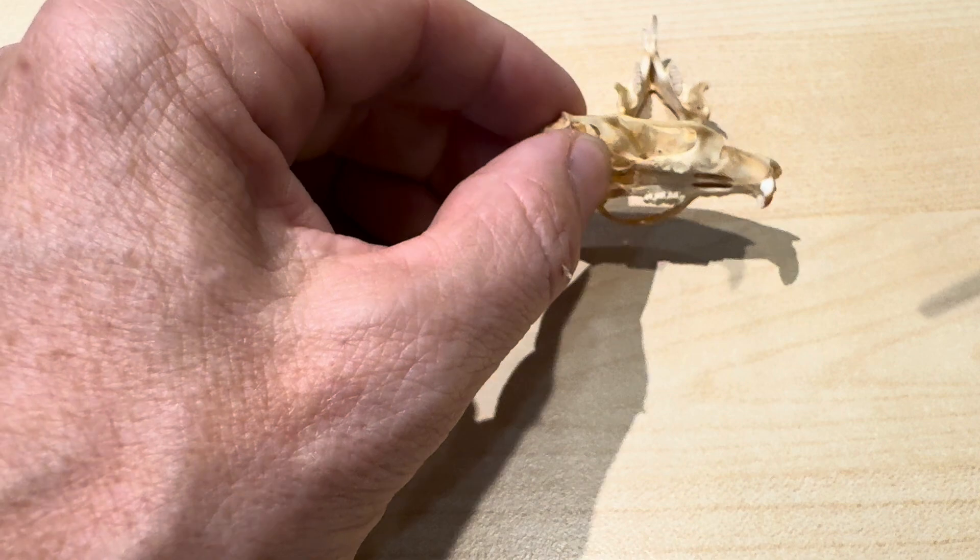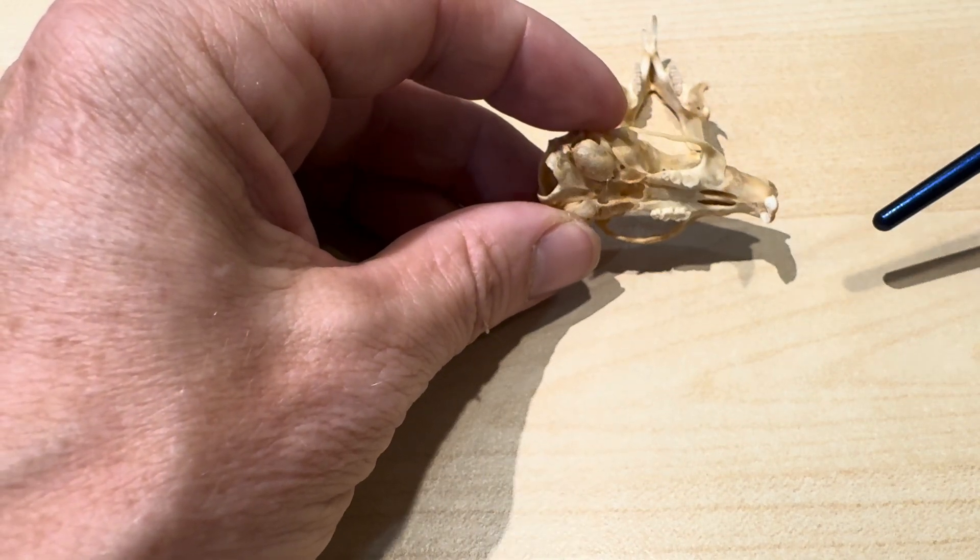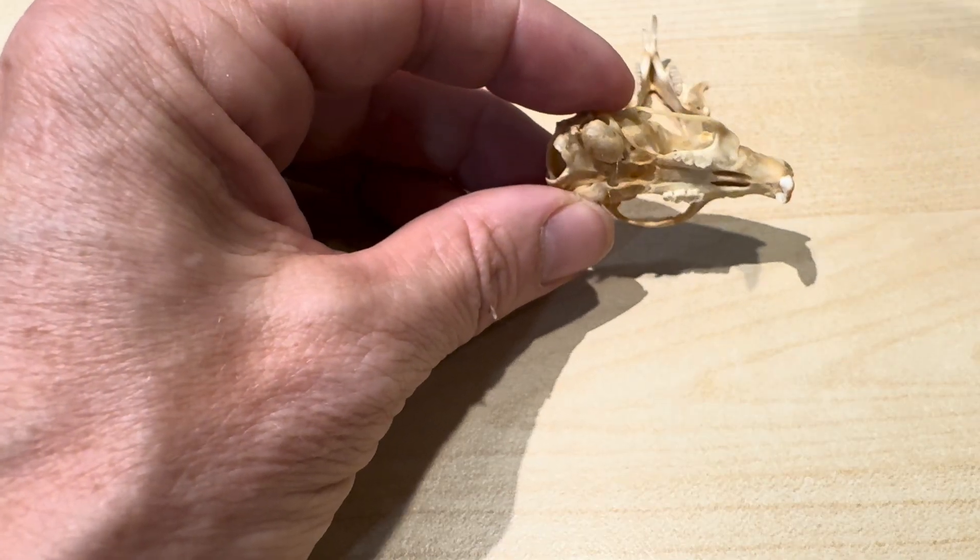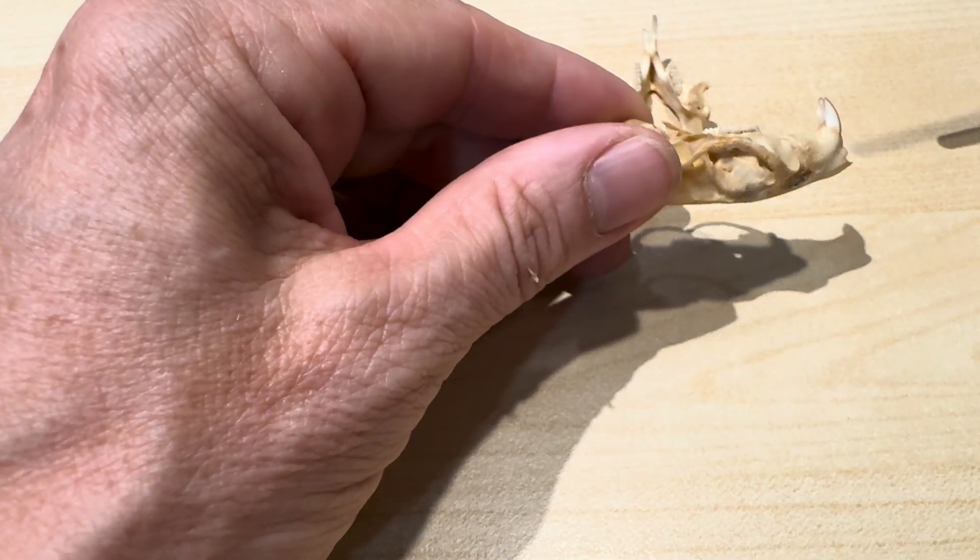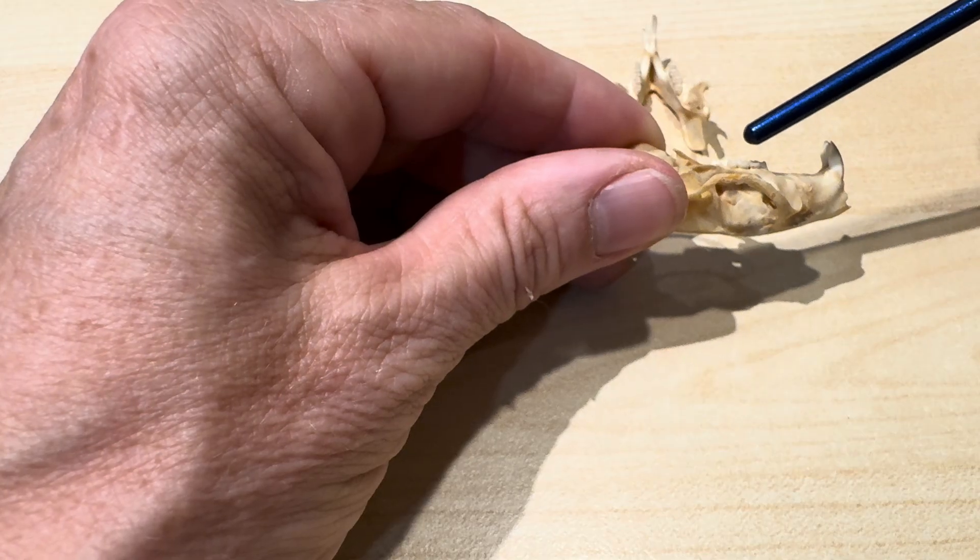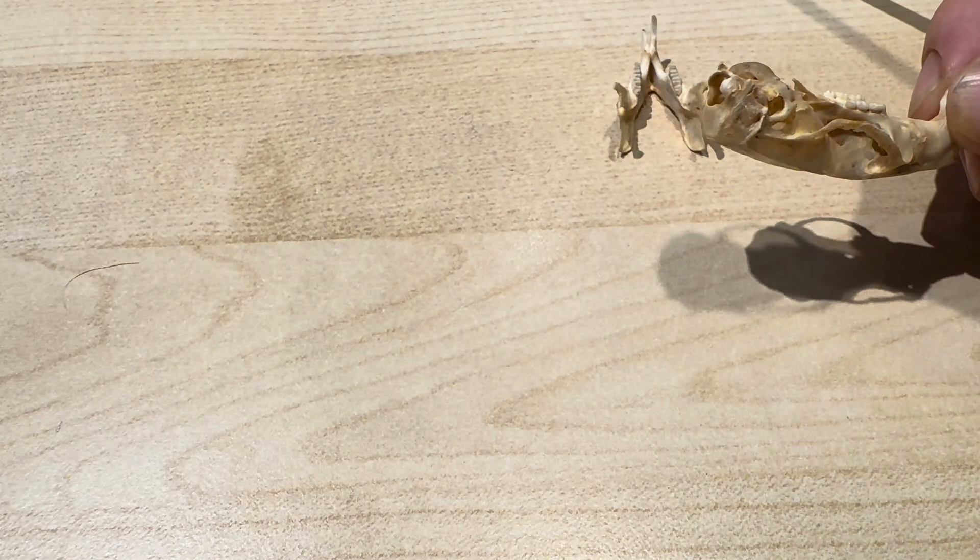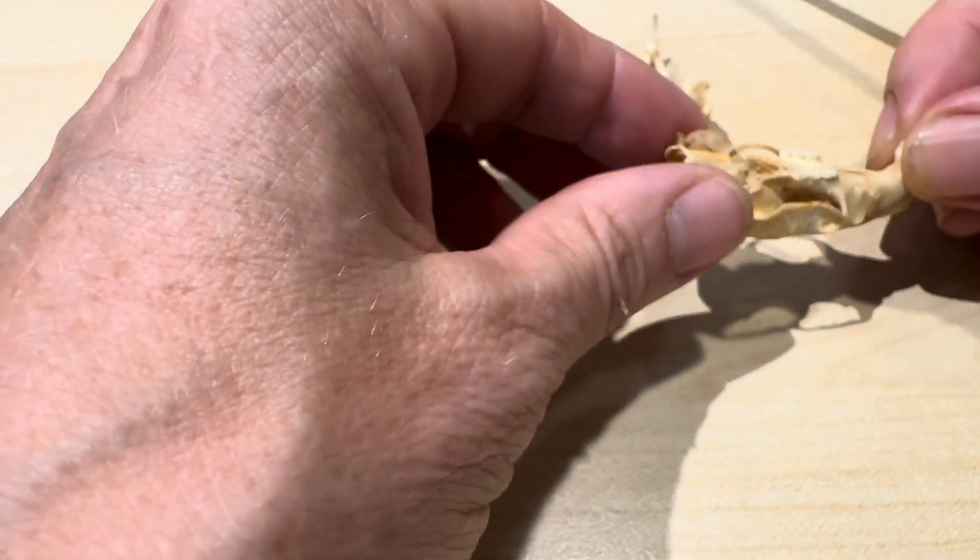Another thing you can take a look at is the number of teeth. They have just 16 teeth total. There are four per quadrant. And we have one incisor and one, two, three cheek teeth. These are all molars.